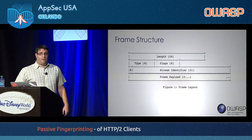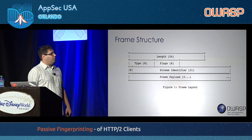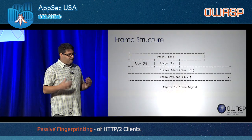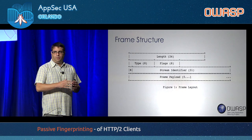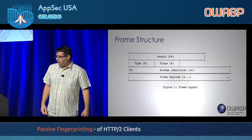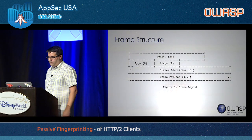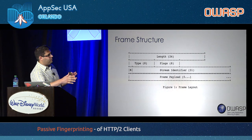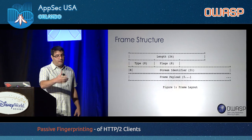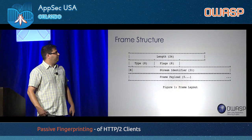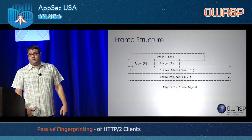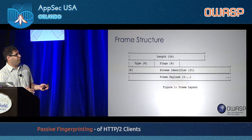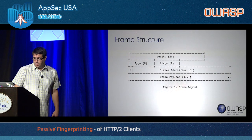Since HTTP/2 is a binary protocol, messages are no longer exchanged as text — they are a blob of bits. The frame structure defined in the RFC has the first 24 bits controlling the length, then a type field, some flags, a stream identifier — since each frame is allocated to a certain stream — and of course the payload.